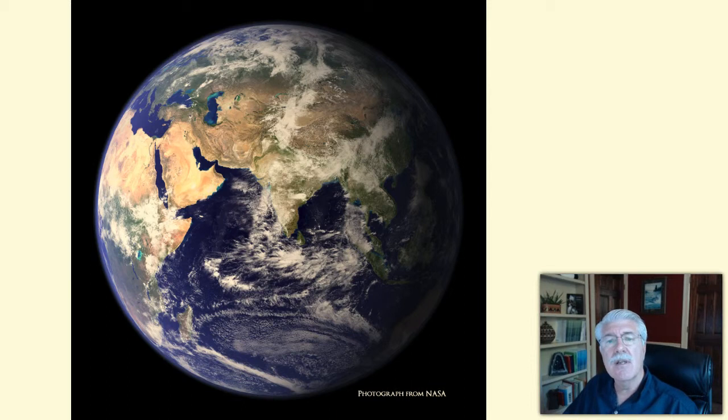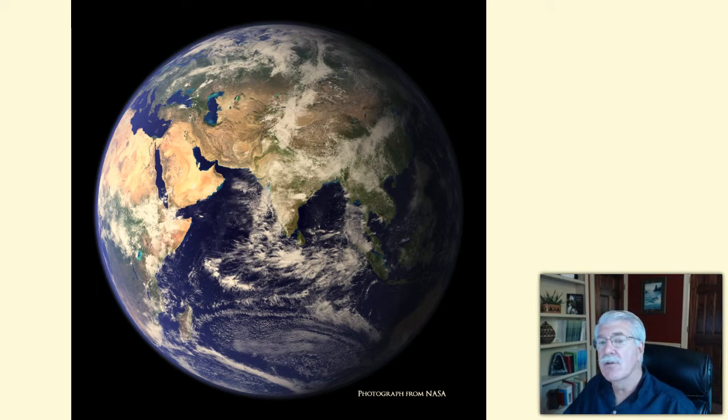Earth's water is continually being recycled through what we call the hydrologic cycle. From wetlands, oceans, lakes, and streams, water evaporates into the atmosphere as water vapor, and then it falls back to Earth as rain or snow.